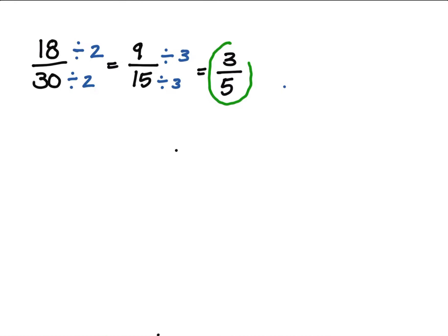So 3/5 is what we get when we do it the long way. So this is just one way to get it.